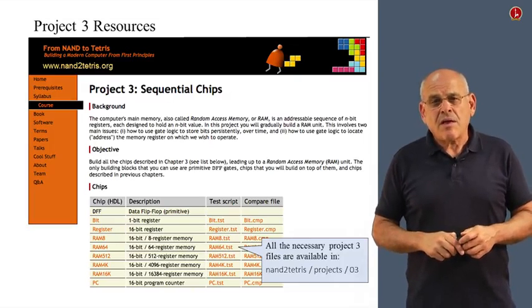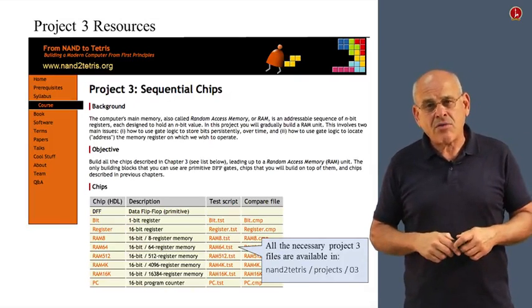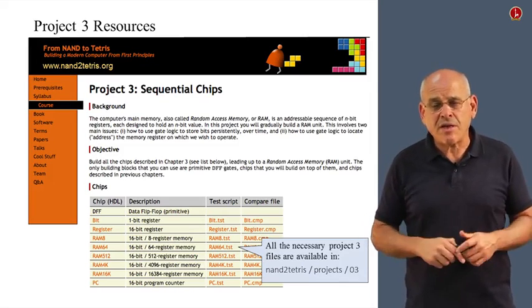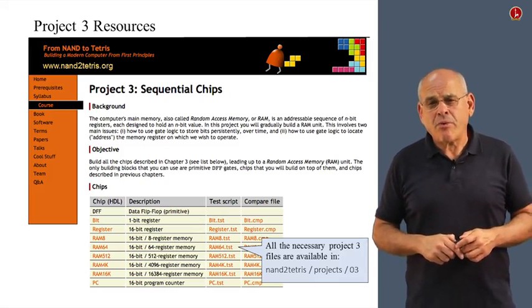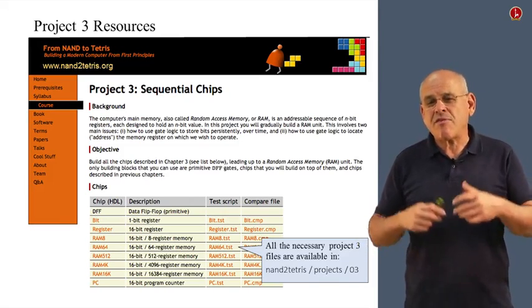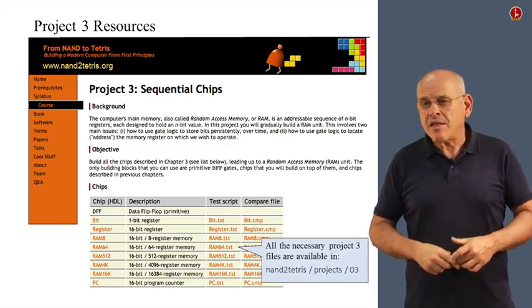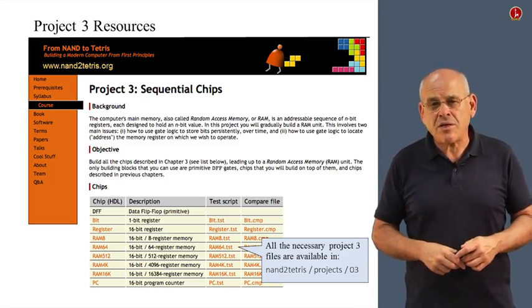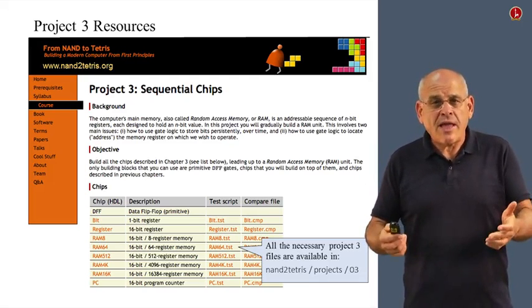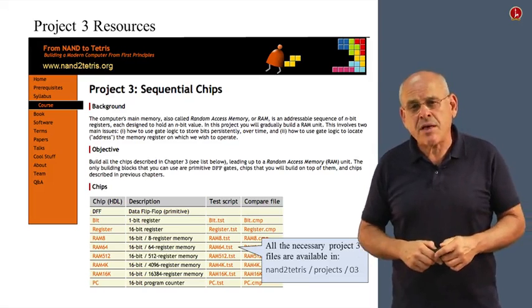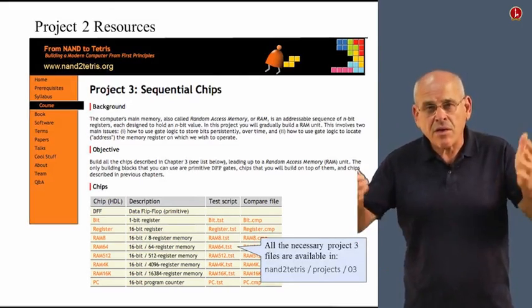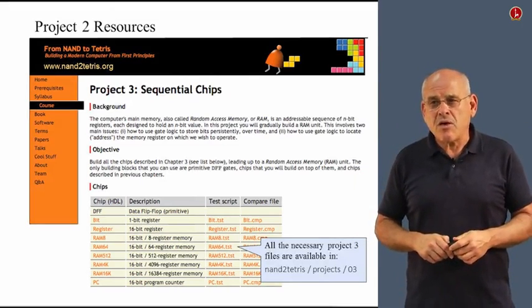As usual, you go to the NAND to Tetris website, and you will find the project webpage with lots of additional operational details. Once again, I want to emphasize for the third time in this course, that if you have downloaded the course software suite, there's no need to download anything in addition. This is just for documentation purposes. And you already have all the necessary files on your computer in the directory project slash 03. And you have your hardware simulator, and you're set to go and build all these chips on your own.